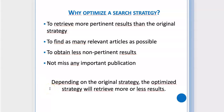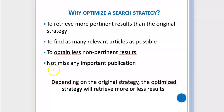Also, depending on where you started, the optimized strategy might retrieve more results. If you start with a very specific strategy and missed many keywords, maybe you will retrieve more articles with your optimized strategy. Or, as in the example we did here, sometimes you started too broad, and in the end you will get fewer results but they will be more related to your research topic. I hope this video will help you to optimize your search strategy. If you have any questions, do not hesitate to contact your teaching librarian.